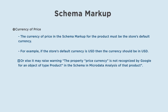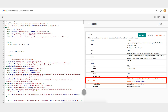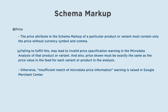The price attribute in the schema markup of a particular product or variant must contain only the price without currency symbol and comma. Failing to fulfill this may lead to an invalid price specification warning in the microdata analysis of that product or variant. Also, the price shown must be exactly the same as the price value in the feed for each variant or product.